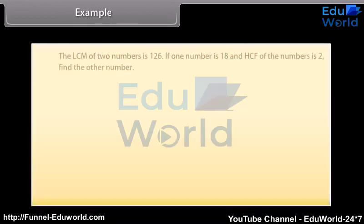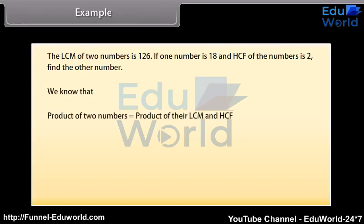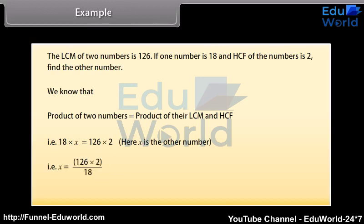Example: The LCM of two numbers is 126. If one number is 18 and the HCF of the numbers is 2, find the other number. We know that the product of two numbers equals the product of their LCM and HCF. So 18 × X = 126 × 2, therefore X = (126 × 2) / 18 = 14.